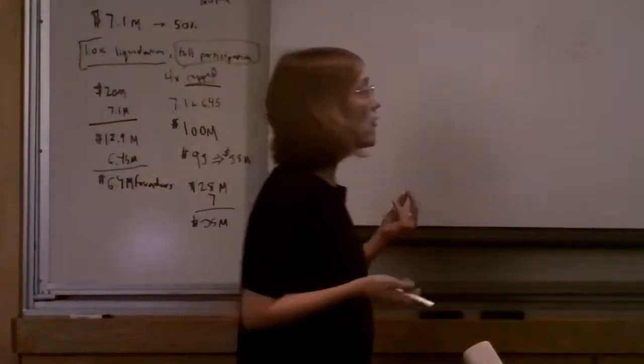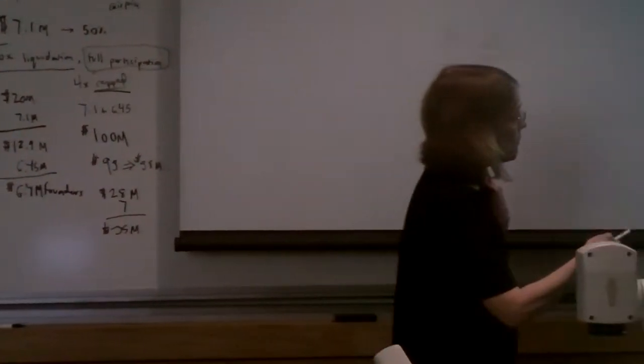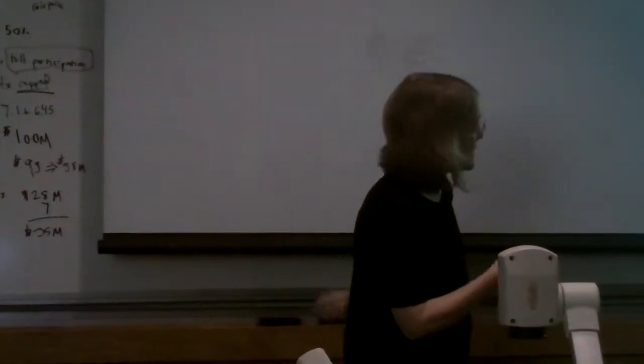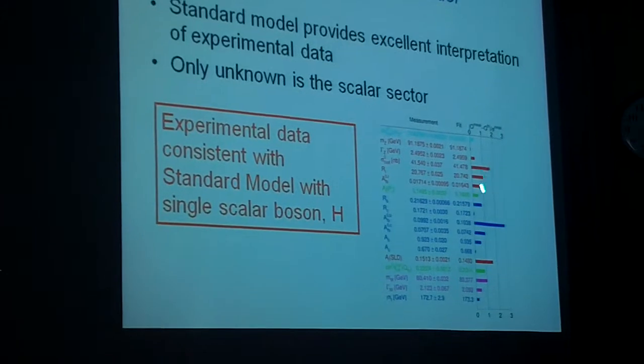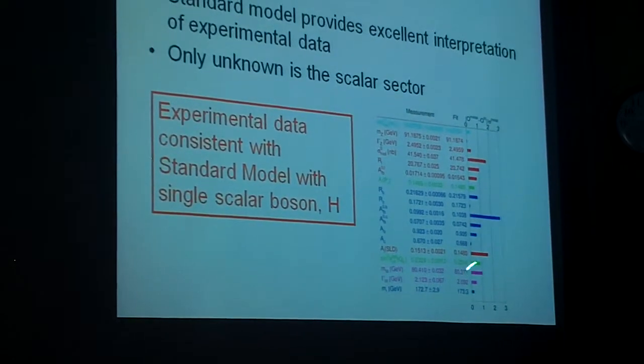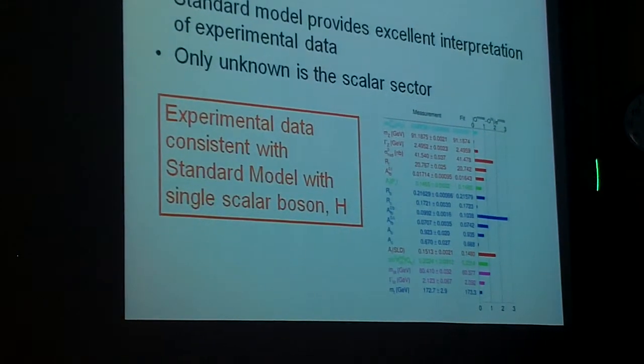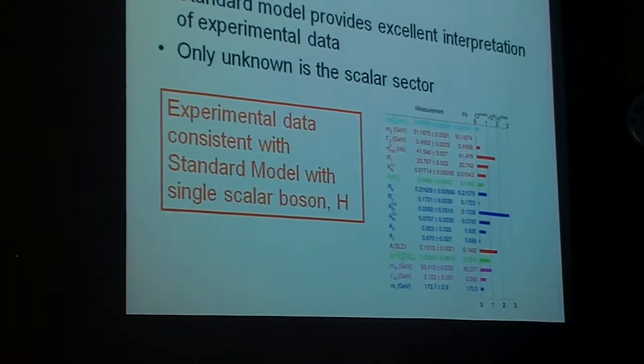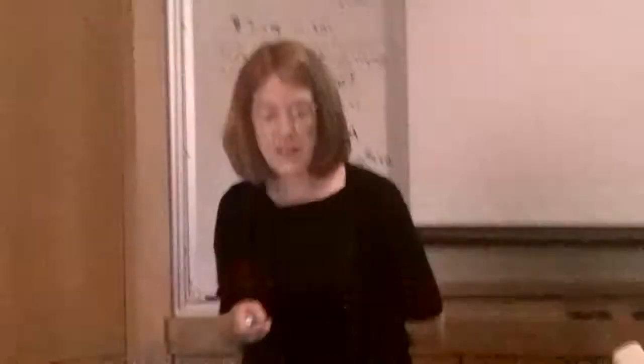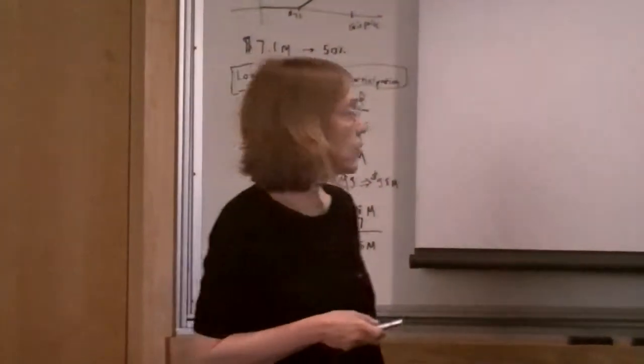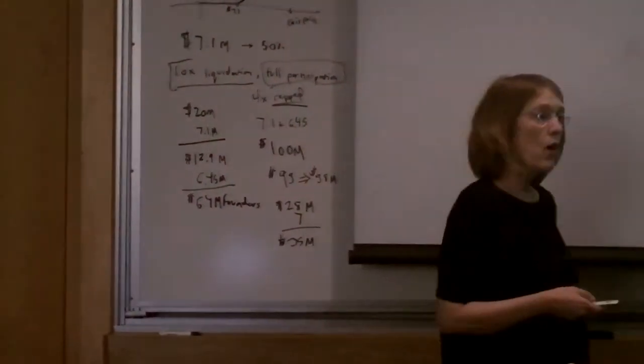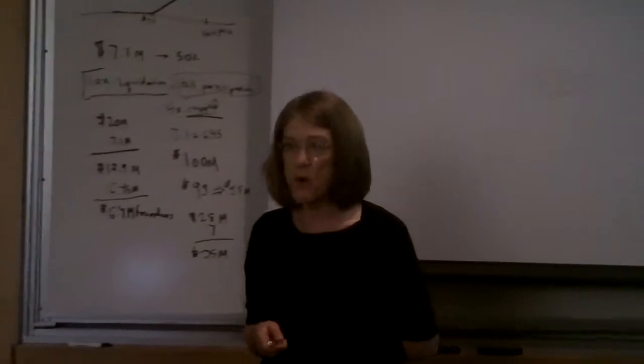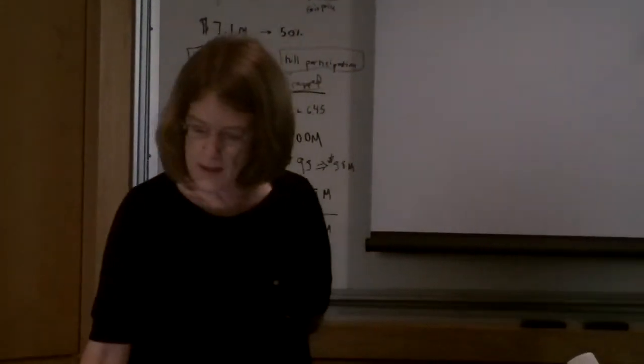And then we can fit and predict all the rest of these things. So you can see this is the number of standard deviations the fit is from the experimental value. And you can see almost everything is in perfect agreement between the prediction of the fit and the experiment. So the experimental data is completely consistent with our standard model with the single scalar boson. I should also say there's absolutely no experimental evidence that this boson exists.